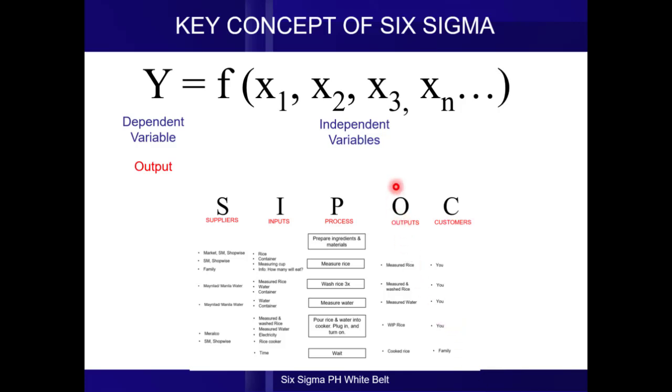If the output column of the SIPOC diagram represents the Y, what column represents the Xs? The Xs are your inputs, and of course, we have the inputs column, plus the process steps, which is the third column. Therefore, the Xs in the Six Sigma equation is being represented by the inputs and process column in the SIPOC diagram.